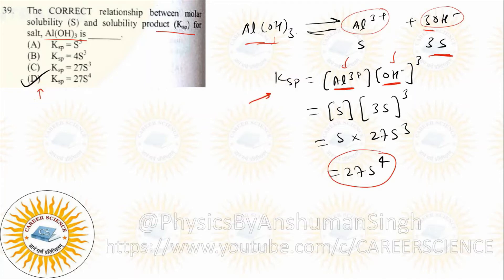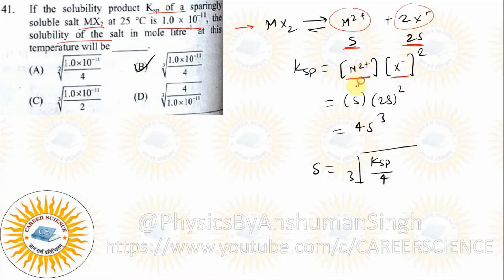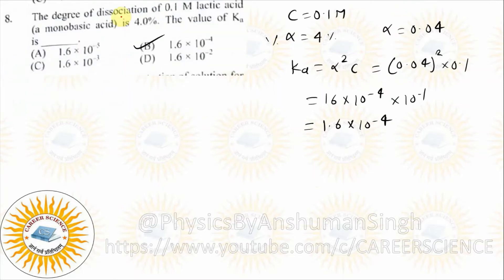Next: solubility product Ksp for sparingly soluble salt MX2 is 1.0 × 10⁻¹¹. The solubility of MX2: M²+ gives s, and 2X- gives 2s. So Ksp = s × (2s)² = 4s³. Therefore s = (Ksp/4)^(1/3). The correct answer will be B.